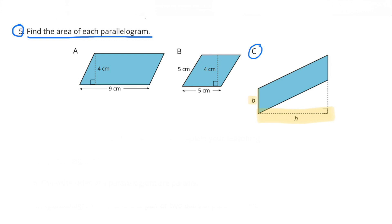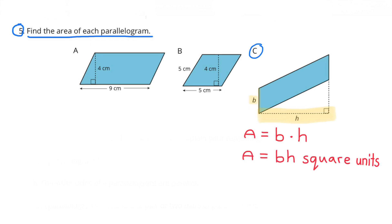C: They've identified the base as B. The height would be at a 90 degree angle compared to B. H is the height and B is the base. Base times height equals the area, so the area equals B times H, or BH, square units.